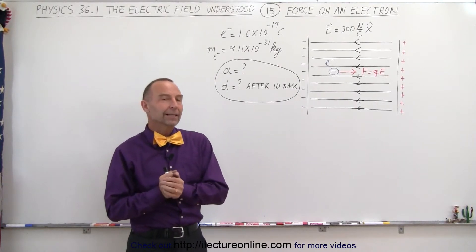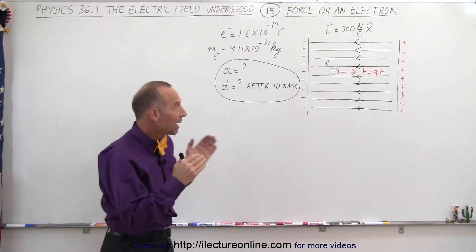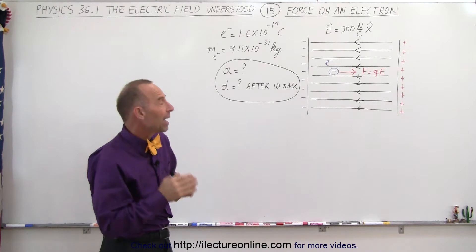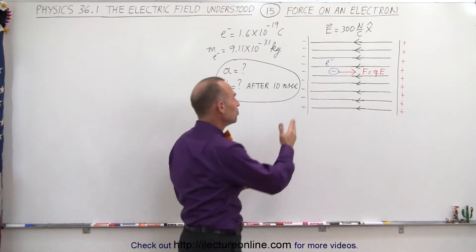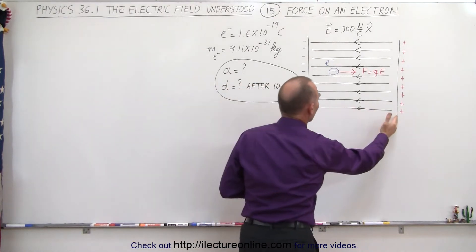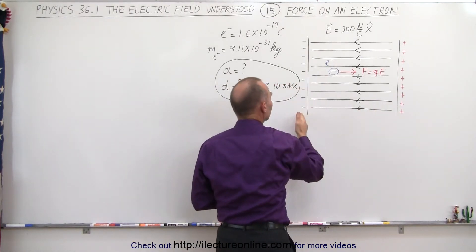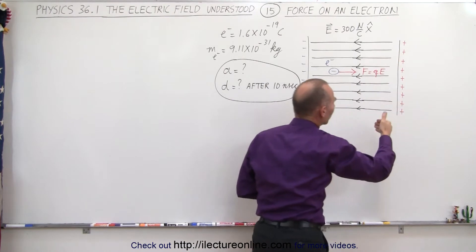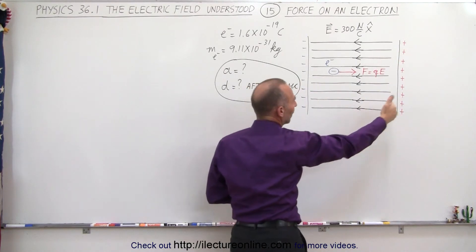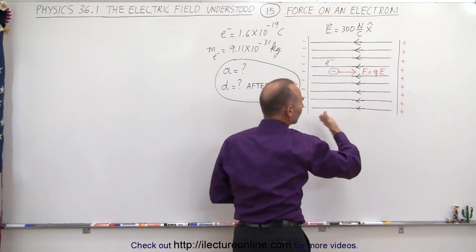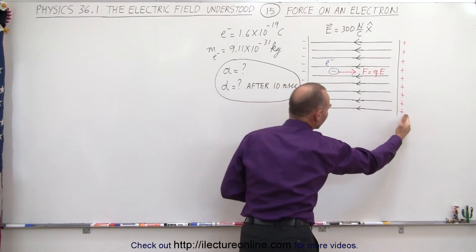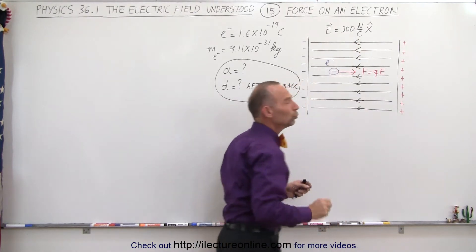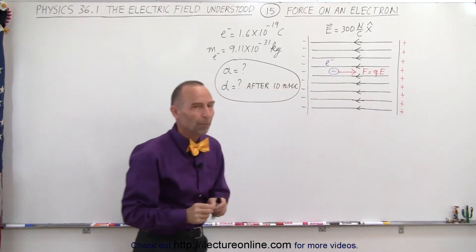Welcome to ElectronLine. What we have here is a pair of capacitor plates — two metal plates. The one on the left has negative charge, the one on the right has positive charge, in such a way that we have an electric field from the positive to the negative charge with a magnitude of 300 newtons per coulomb.